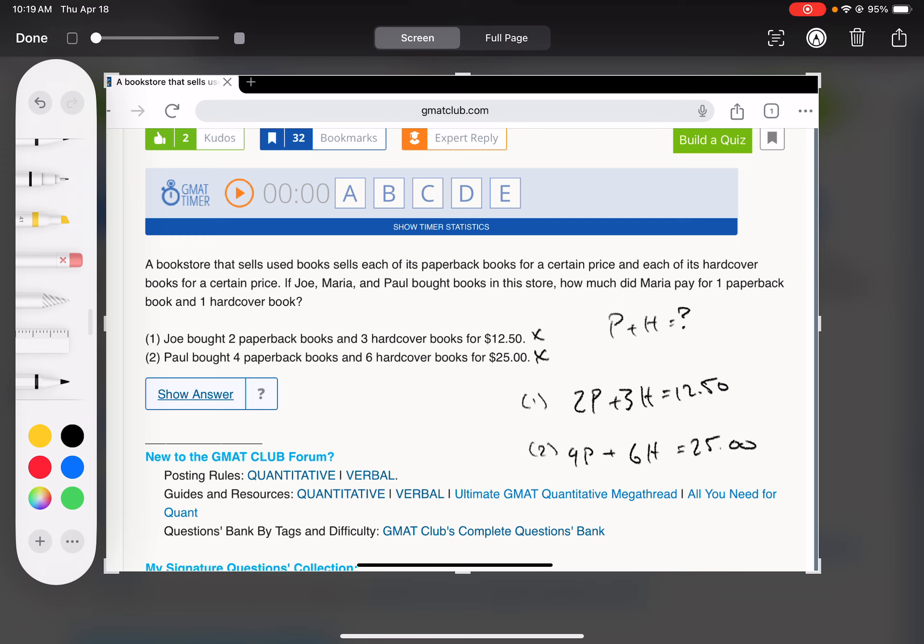And the other problem with that logic is this situation where you actually do not have two unique equations. 4P plus 6H equals $25 is just number one, it's just the first equation times two.